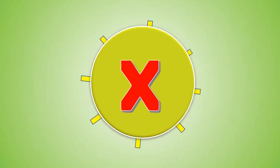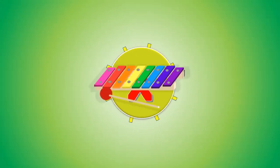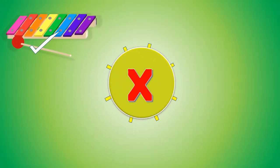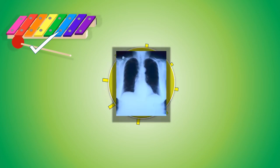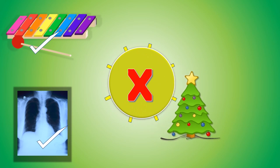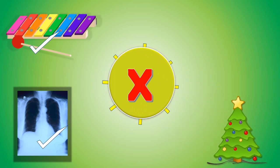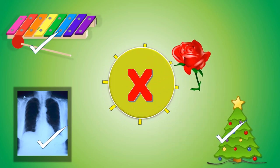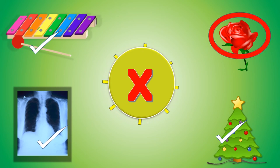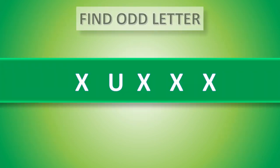X. X for xylophone, correct, yes. X for x-ray, correct, yes. X for Christmas tree, correct, yes. X for rose — no, it's wrong. Find odd letter.